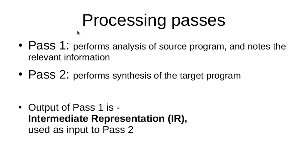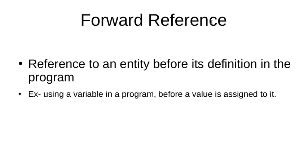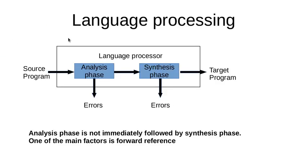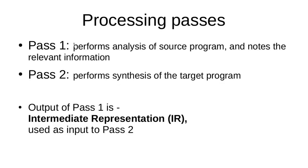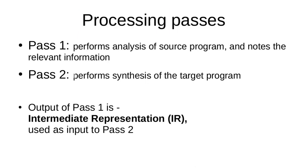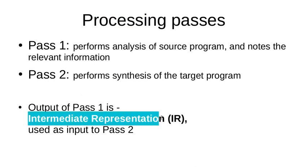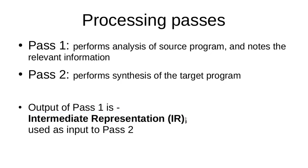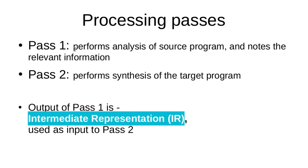There are two passes of processing. The whole point of discussing forward reference is to understand that the analysis phase does not directly precede the synthesis phase — there is something in between. Pass 1 performs analysis of the source program, notes the relevant information, and generates some output. That output is used by pass 2, which performs synthesis of the target program.